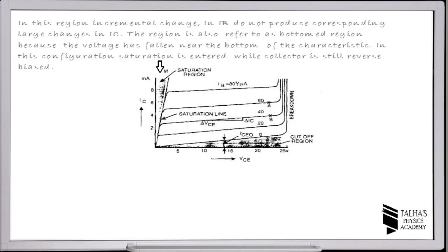The third region is the saturation region. In this region, incremental changes in base current do not produce correspondingly large changes in IC. As you can see in the picture, this region is also referred to as the bottom region, because the voltage has fallen near the bottom of the characteristic. In this configuration, saturation is entered while the collector is still reverse biased.